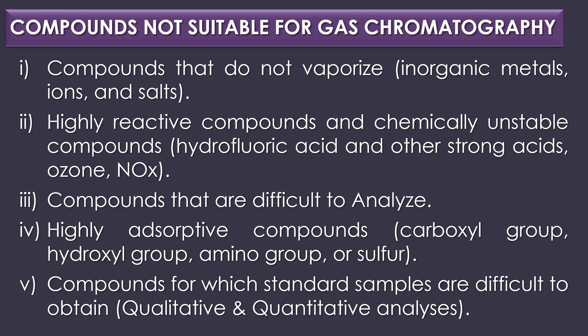Components not suitable for gas chromatography include compounds that do not vaporize such as inorganic metals, ions and salts. Also excluded are highly reactive and chemically unstable compounds like hydrofluoric acid and other strong acids, ozone, nitrogen monoxide, and other highly reactive compounds. Compounds that are difficult to analyze include highly absorptive compounds containing a carboxyl group, hydroxyl group, amino group or sulfur, and compounds for which standard samples are difficult to obtain.